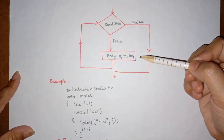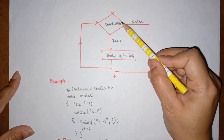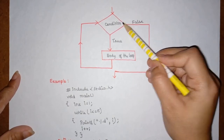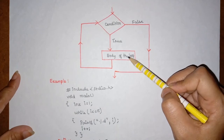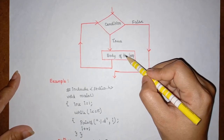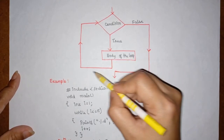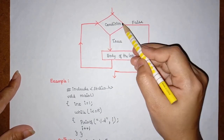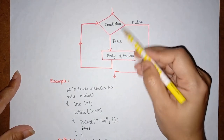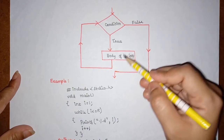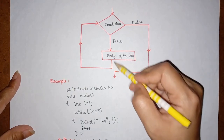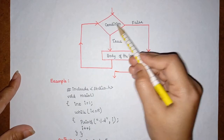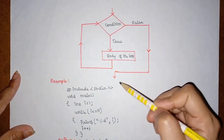This is the flowchart for the while loop. Initially, the condition is checked. When the condition is true, the body of the loop gets executed; then control moves back to the while condition and checks again. If the condition becomes false, the loop terminates.